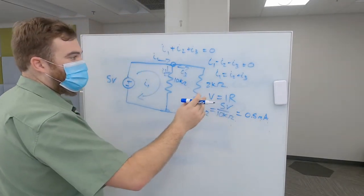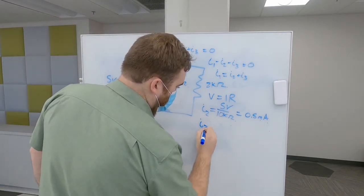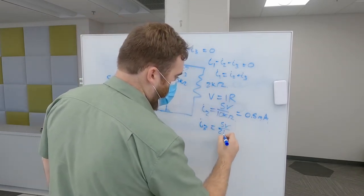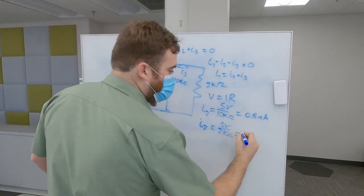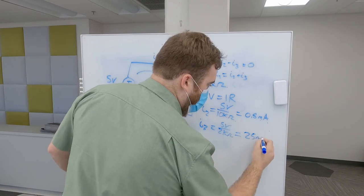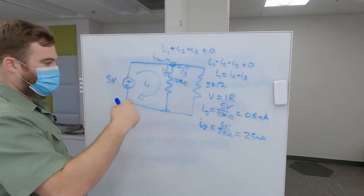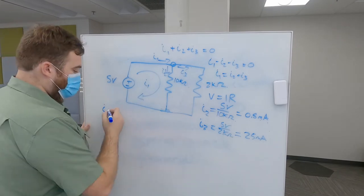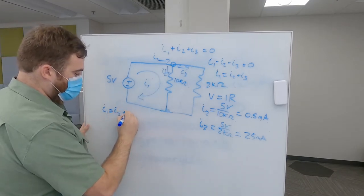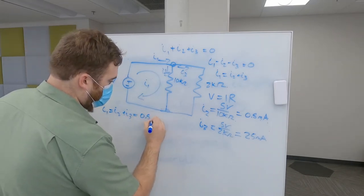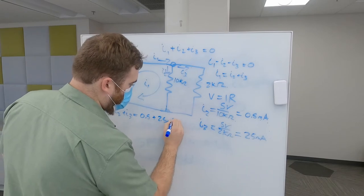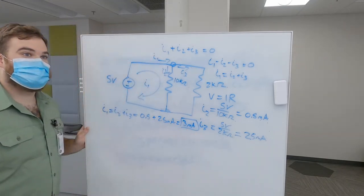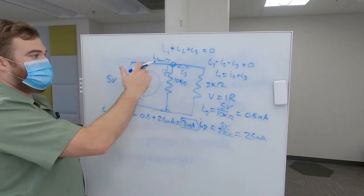So now we can calculate the current through I3 here. Similarly, I3 here is going to be 5 volts again, but now we're in this 2 kilohm resistor. So what does that give us? That gives us 2.5 milliamps. So now the total current I, we called it I1 here before, that's going to be the total current, is I2 plus I3, which is 0.5 plus 2.5 milliamps, which is just 3 milliamps.